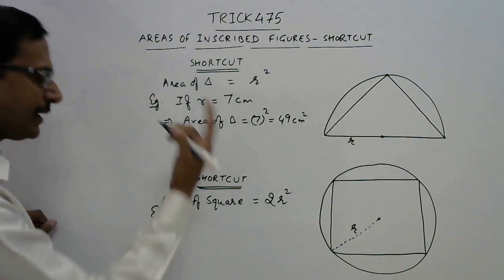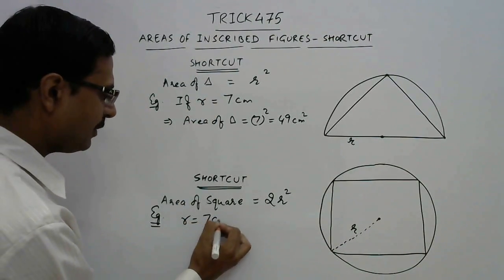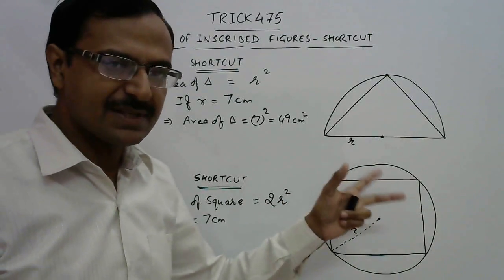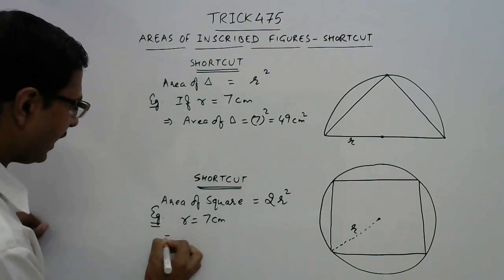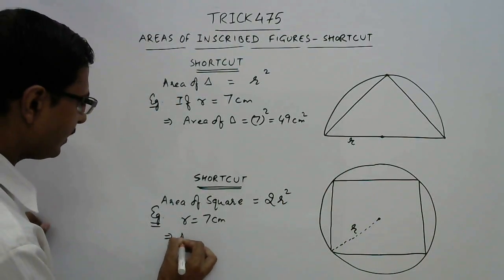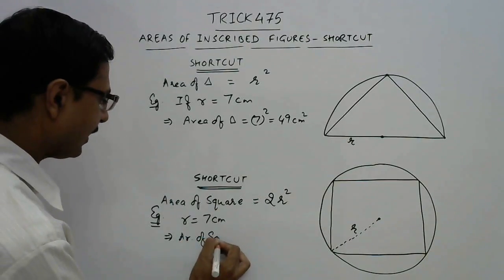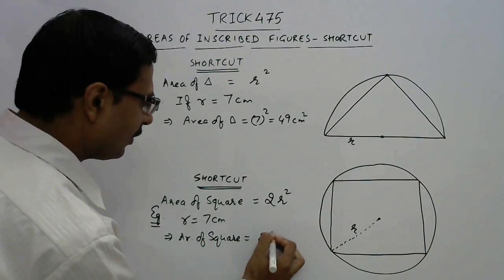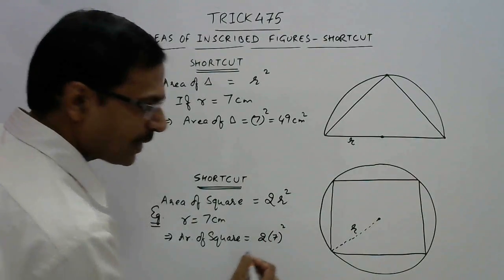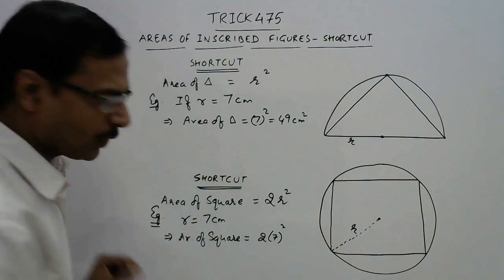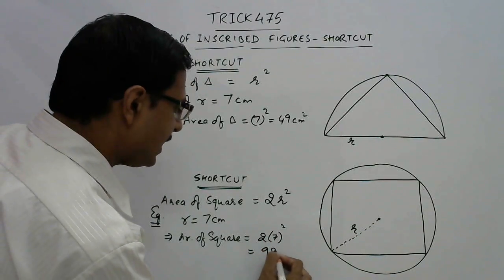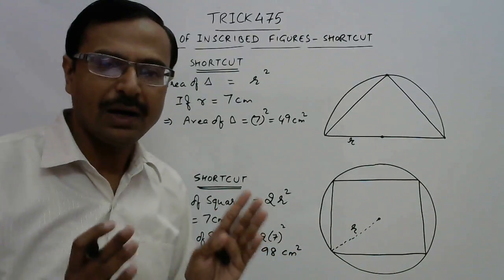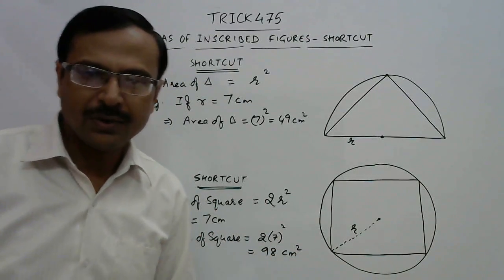To apply this formula, suppose again I take the radius as 7 centimeters. If the radius of the circle is 7 centimeters, then the area of the inscribed square will be 2 × 7² = 2 × 49 = 98 square centimeters.